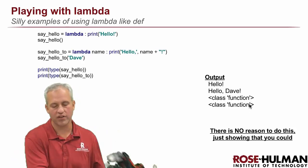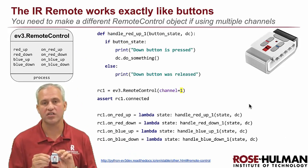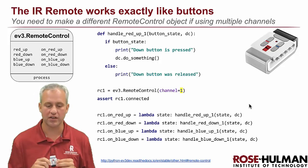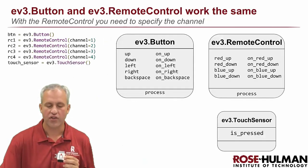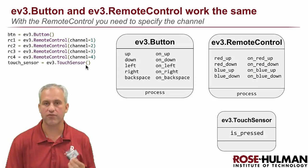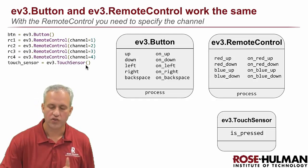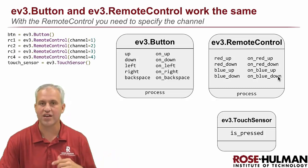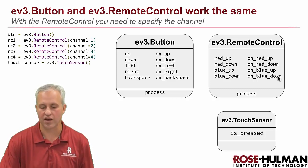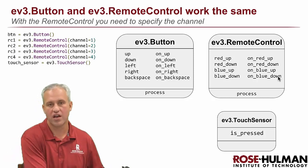Next is the remote control with events. The nice thing is they work exactly the same as buttons. The only thing that's different is the names: `red_up`, `red_down`, `blue_up`, `blue_down`. They've got a process just like the buttons. The other difference is you can have four of them for channels one, two, three, and four. So buttons and remote control are kind of complex — usually use events with Lambda syntax. Touch sensor, on the other hand, super simple — `isPressed`, true or false, that's it.